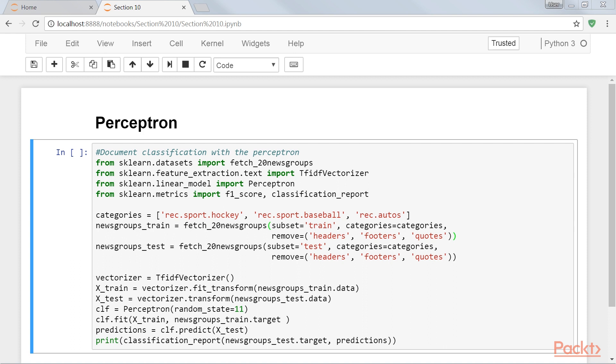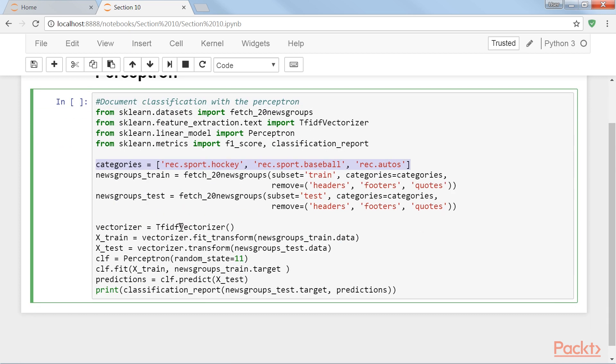We'll train a perceptron to classify documents from three newsgroups: Rec Sports Hockey, Rec Sports Baseball and Rec Auto. Perceptron is capable of multi-class classification. It will use the one-versus-all strategy to train a classifier for each of the classes in the training data. The partial fit method can be used in conjunction with hashing vectorizer to train from large or streaming data in a memory-constrained setting.